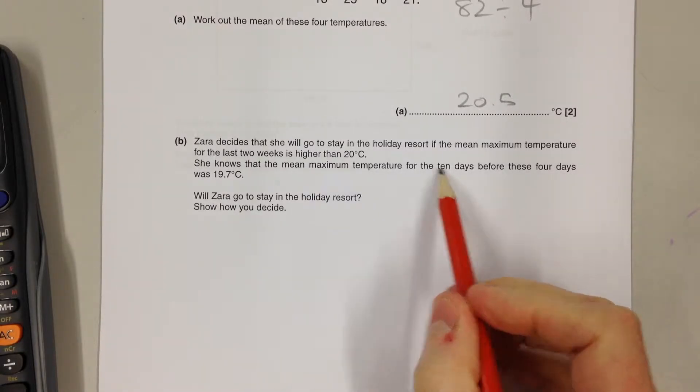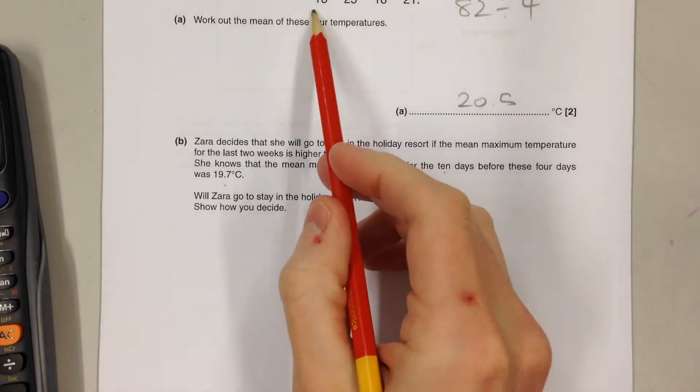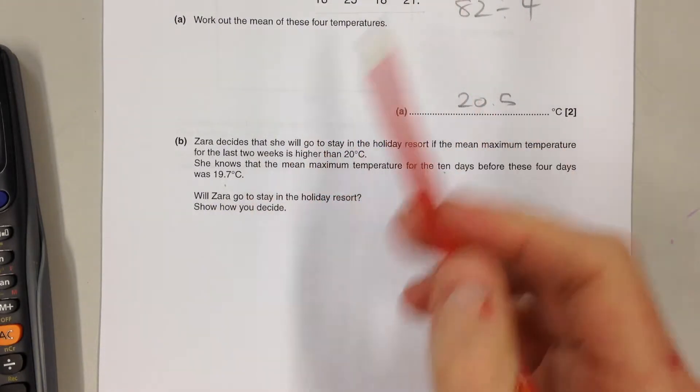So we've got 10 days where the mean was 19.7, and then we've got these four days here. Altogether that makes 14 days.